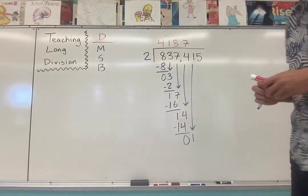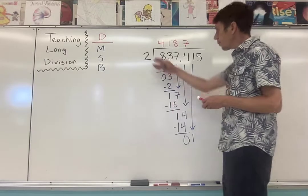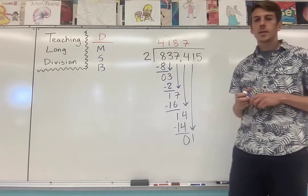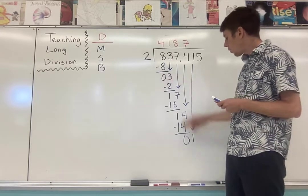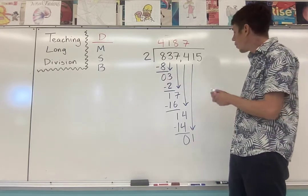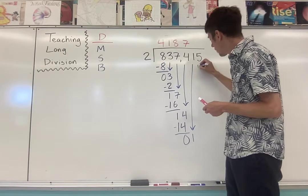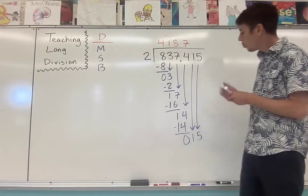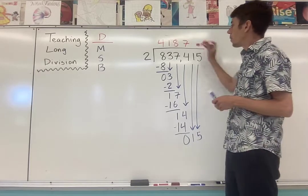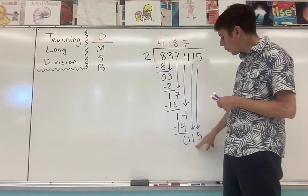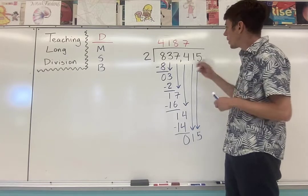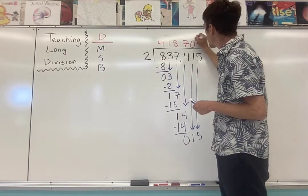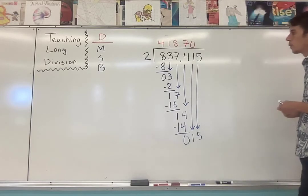Something interesting happened here. We brought down the one. Two cannot go into one. So what I call this is a double bring down. If two can't go into one, we have to bring down the next digit, the five to make 15. But whenever you do that double bring down, you have to put a zero up on the roof. When two couldn't go into one, you put a zero because two can go into one zero times.